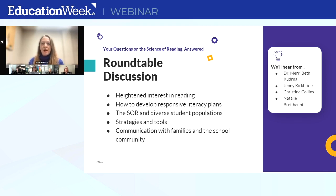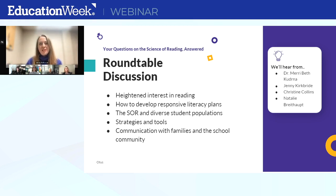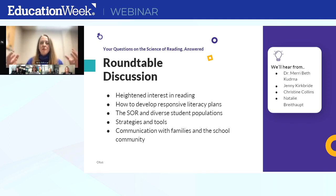In our district, we use DIBELS 8th as our reading screener — students are assessed three times a year. That data is used to determine whether a student has a significant reading deficiency. If they do, we have the plan. We do use Otis, which is helpful in a couple of different ways — it serves as both the home for our READ plans and as our data warehouse. We're able to use filters to identify students who need those plans. From my experience, teachers generally know, but administrators want to be able to filter and see to make sure no one is falling through the cracks.